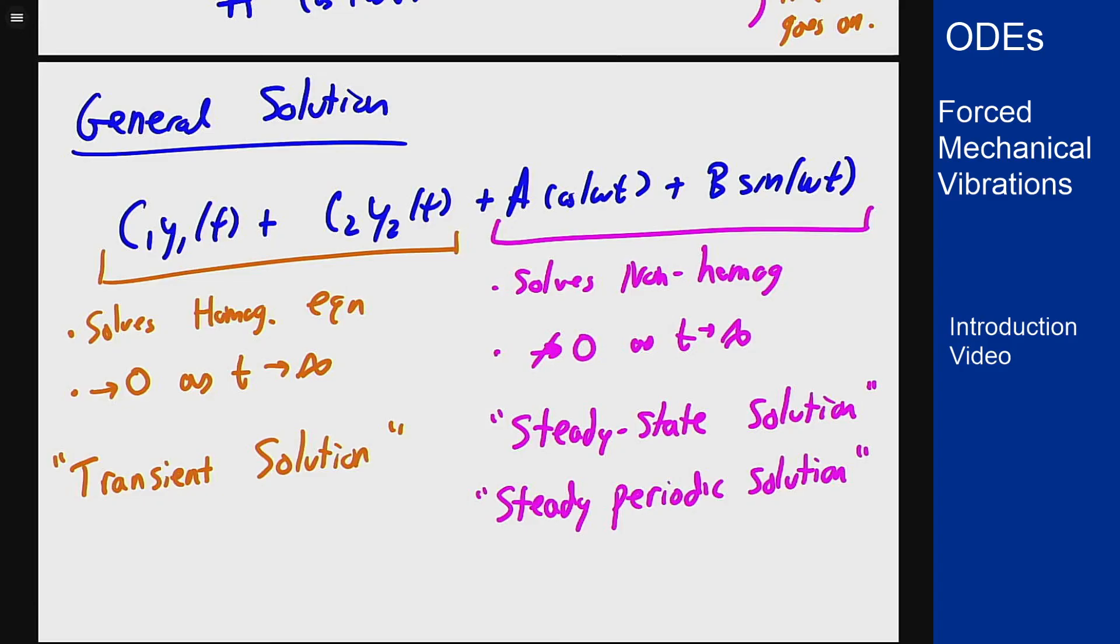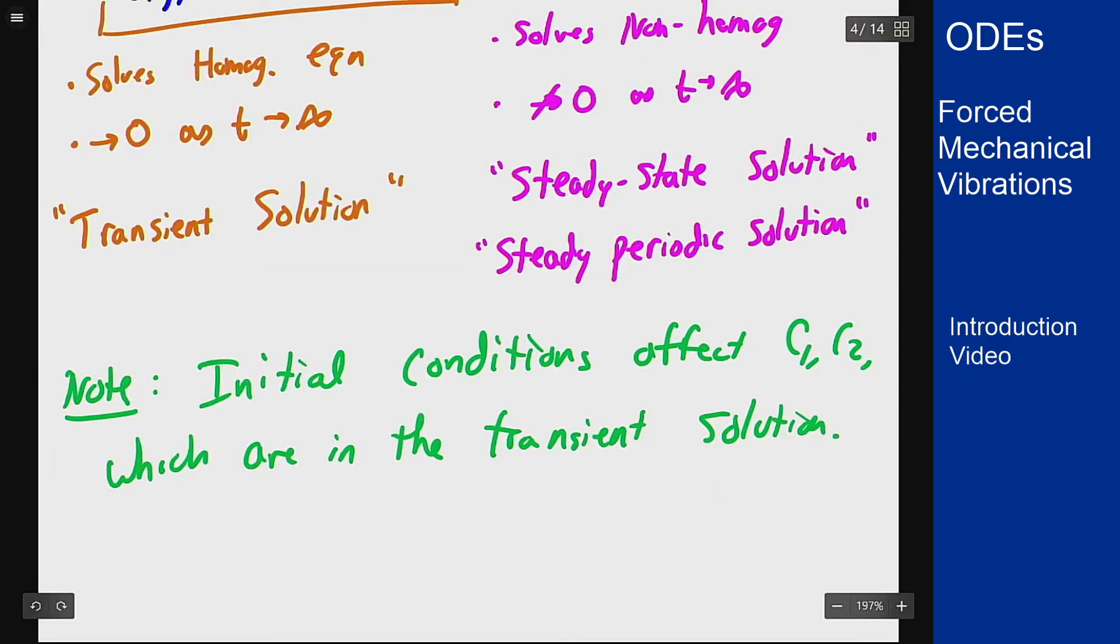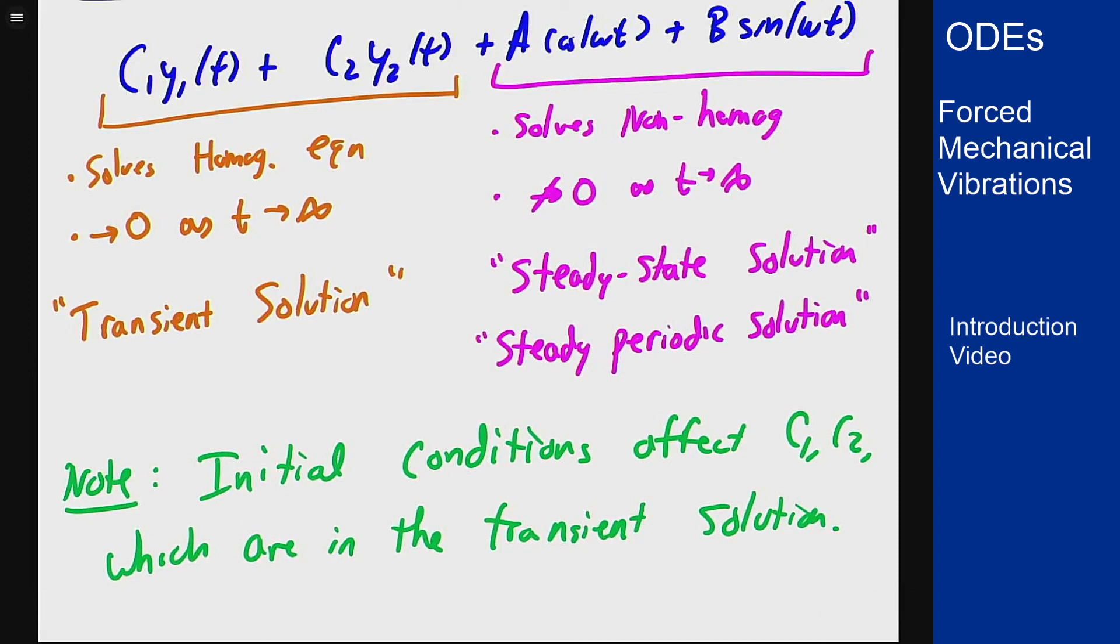One other interesting fact from this is that the initial conditions only show up in c₁ and c₂, which are in the transient solution. Which means that over time that part goes away, so after a while the initial conditions do not matter for the overall behavior of the system. It really all just depends on the forcing, and the part that came from the transient doesn't matter anymore after a certain amount of time.